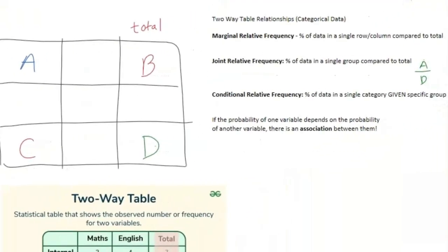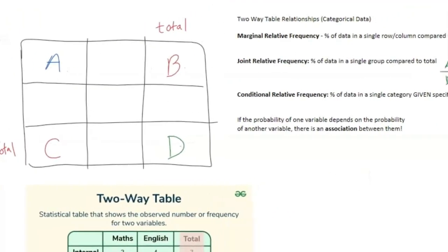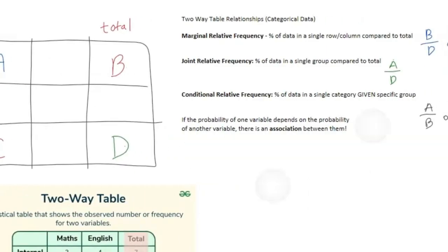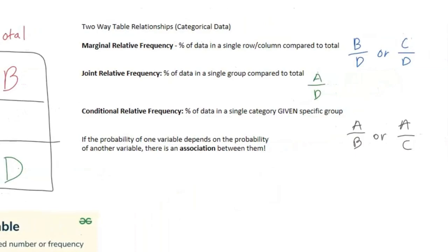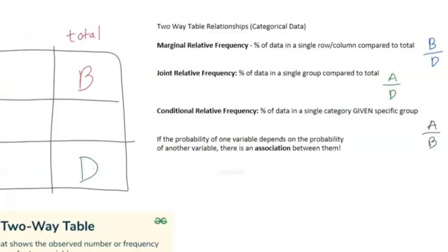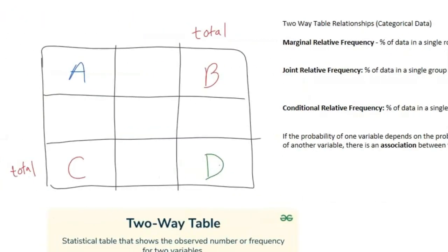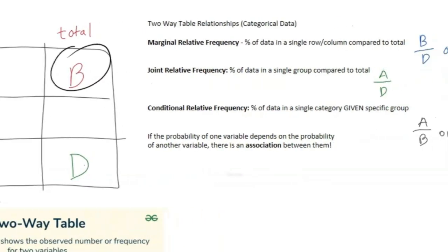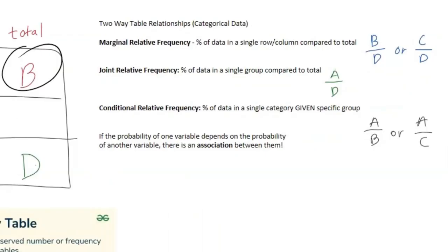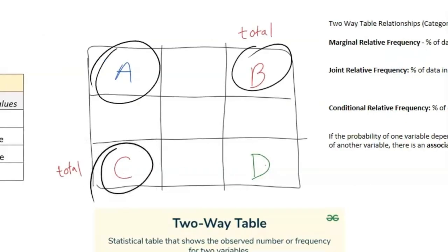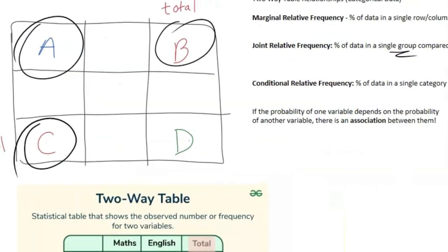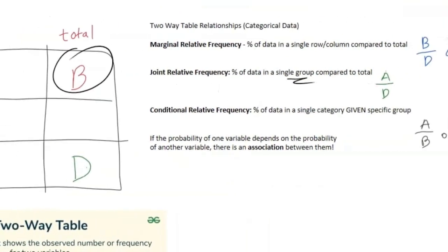The important thing you need to understand is a couple vocab terms that the AP might use. Marginal relative frequency is a percentage of the data in a single row or column compared to the total. If you look at this little chart here, that's going to look at B over D or C over D. We have our column total, which is C over D, and our row total is B over D. The next thing is joint relative frequency - that's a percentage of data in a single group compared to total. That's A over D.